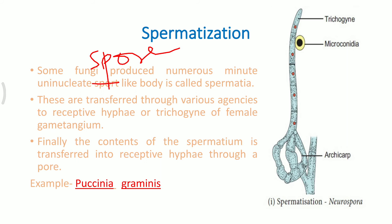The female hypha receives the male microconidia, and from the microconidia the nucleus is transferred inside the gametangium, because the trichogyne is receptive — meaning it is capable of taking the nucleus within itself — resulting in the formation of the Archeocarp or the entire plant body.